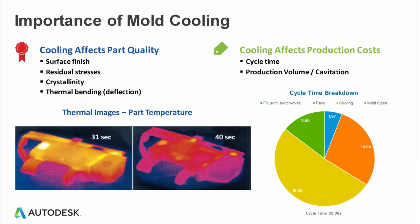Cooling not only impacts overall cycle time — it also has an impact on overall product cost. If you look at the pie chart on the right-hand side, it gives a breakout of the complete injection molding cycle, starting with fill time, then pack, and then cooling time. Cooling time roughly counts for 66 to 75 percent of the overall cycle time. On the left-hand side I've shown thermal images of parts at 31 seconds and 40 seconds, showing how differently temperature distribution would be at different time zones. This is what we're trying to see using Moldflow solutions — to get insight within the mold.